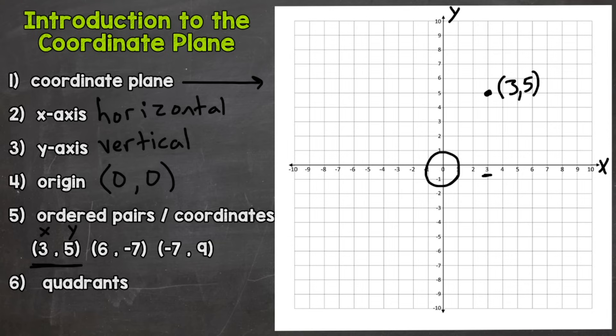The second ordered pair: (6, -7). Again, x always comes first followed by our y-coordinate. We start at the origin in the center, go over a positive 6, and this time go down 7 because that's a negative 7. Over 6, down to negative 7, plot a point where they intersect. I'm going to label this point as well.